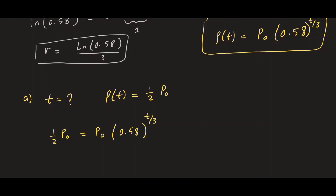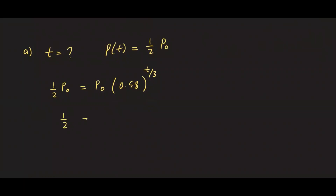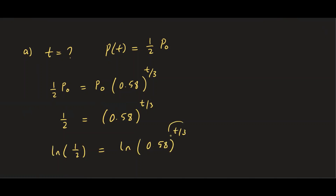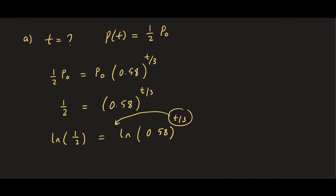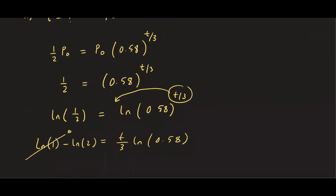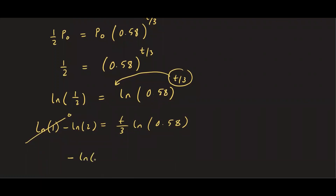Dividing both sides by P₀ gives 1/2 = (0.58)^(T/3). Taking natural log on both sides: ln(1/2) = (T/3)·ln(0.58). We can split ln(1/2) as ln(1) − ln(2), and since ln(1) = 0, this simplifies to −ln(2) = (T/3)·ln(0.58).